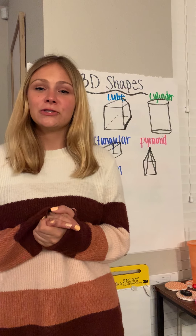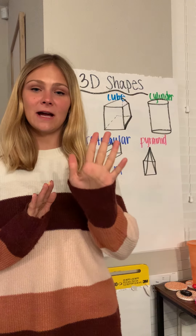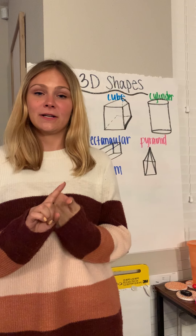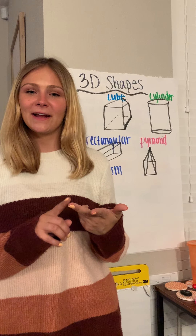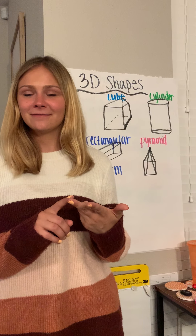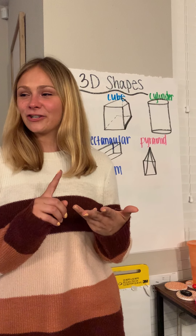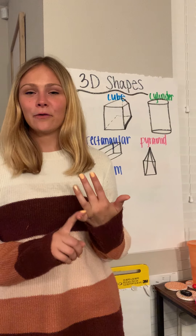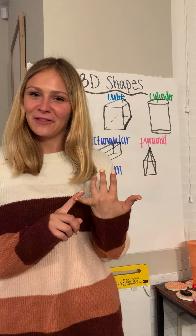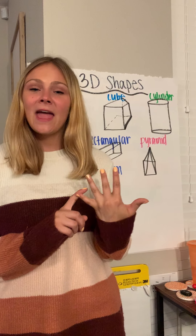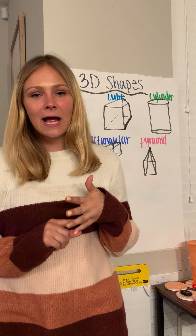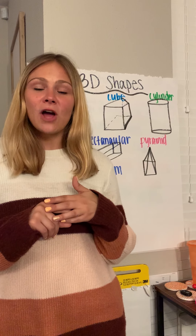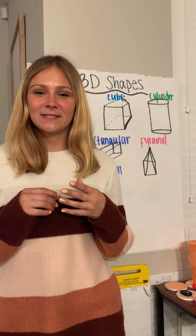When we talk about our 2D shapes, we learned about five important shapes: our circle, our square, our rectangle, our triangle, and our trapezoid. We talked about our 2D shapes for quite some time because it's important when we talk about our 3D shapes.